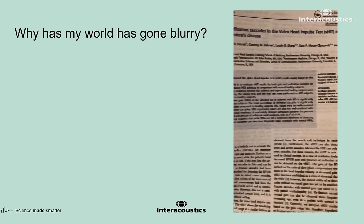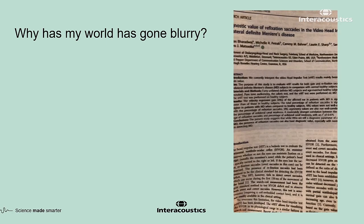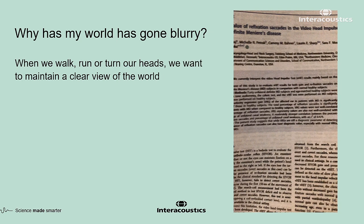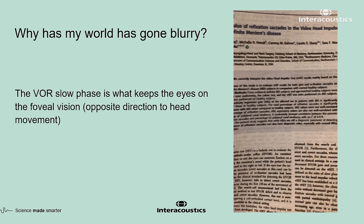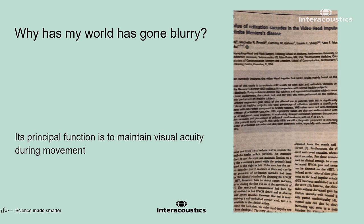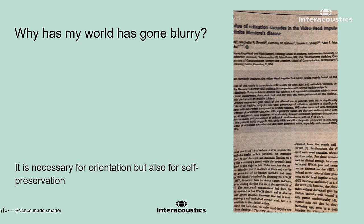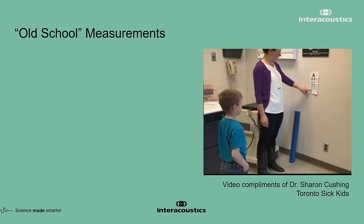What happens when my world has gone blurry? If I have a VOR impairment — vestibular ocular reflex impairment — then I cannot keep a target, a piece of paper, or a stop sign clear. I can't read words clearly when I'm moving my head. This can be a very life-threatening situation. We don't want to be crossing the street, look to the right to check for cars, have our world go blurry, and trip and fall. It's really important that the VOR be intact so we can see clearly while moving our head. The way we test this is by using dynamic visual acuity.